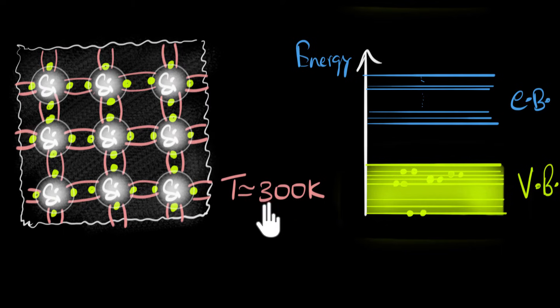What will happen now? Well, now at this temperature, there's a lot of thermal energies available. And as a result, some of these electrons can absorb this thermal energy and jump or get excited from valence band into the conduction band.